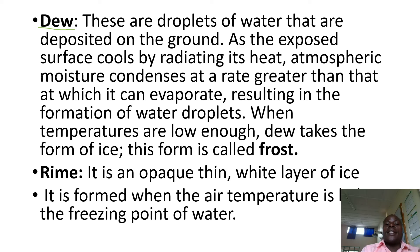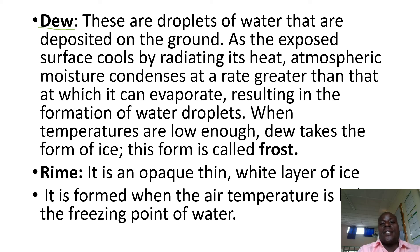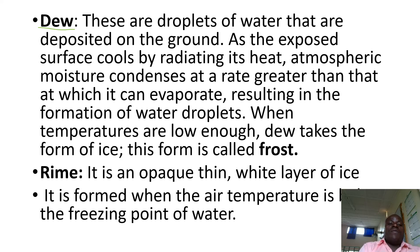Dew refers to droplets of water deposited on the ground or vegetation. Dew is formed when atmospheric moisture — water vapor — condenses at a rate greater than that at which it can evaporate. Before it evaporates, it condenses at a greater rate, and finally it forms dew.